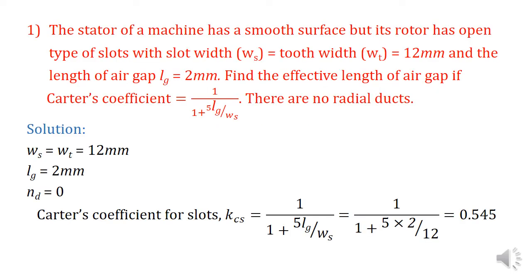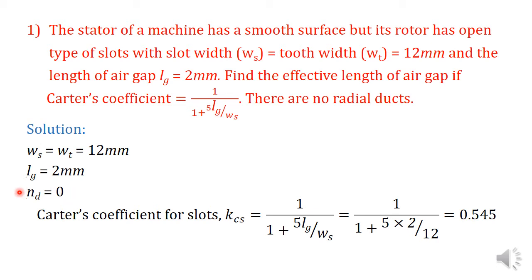The first question: the stator of a machine has a smooth surface but its rotor has open type of slots with slot width WS equal to tooth width WT equal to 12 mm. Width of slot and width of tooth are equal at 12 mm, and the length of air gap LG is equal to 2 mm. Find the effective length of air gap if the Carter's coefficient is equal to 1 by (1 plus 5 LG by WS). There are no radial ventilating ducts, so N is equal to 0.